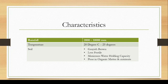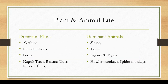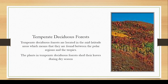The soil condition in the tropical rainforest is grayish brown, less fertile, with maximum water holding capacity. As there is continuous rainfall, the soil is poor in organic matter and nutrients. From these characteristics we can conclude that tropical rainforest inhabits a very limited amount of organisms with these specific requirements. The dominant plants are orchids, philodendrons, ferns, kapok trees, banana trees, and rubber trees. The dominant animals are sloths, tapirs, jaguars, tigers, howler monkeys, and spider monkeys.